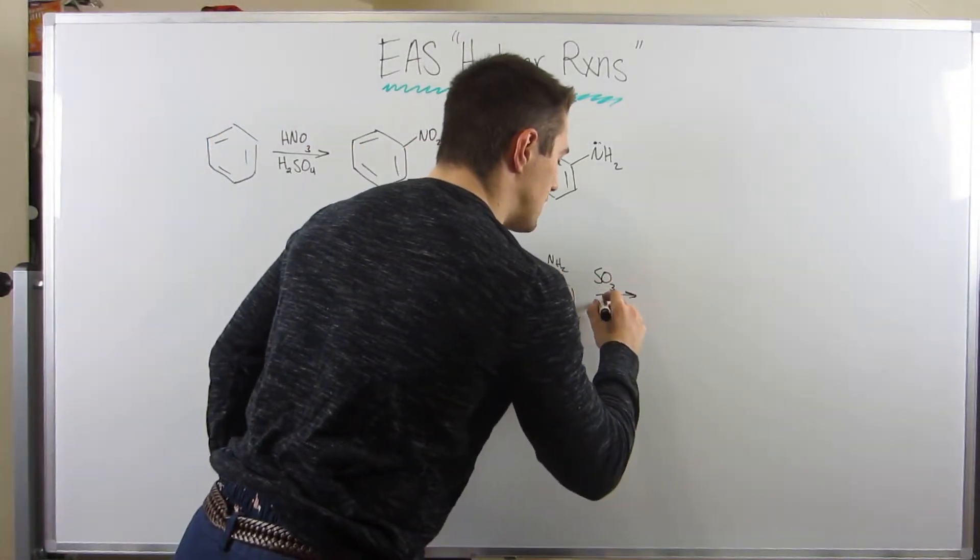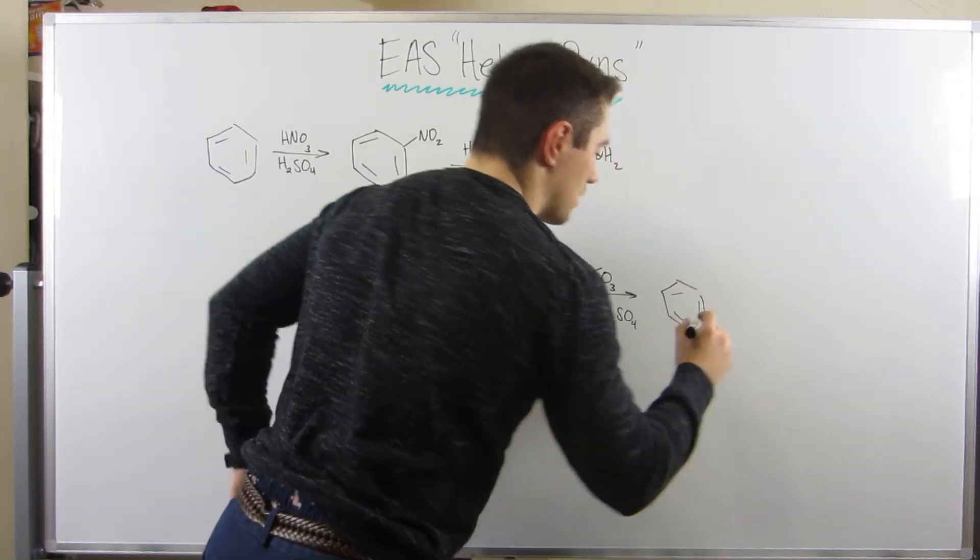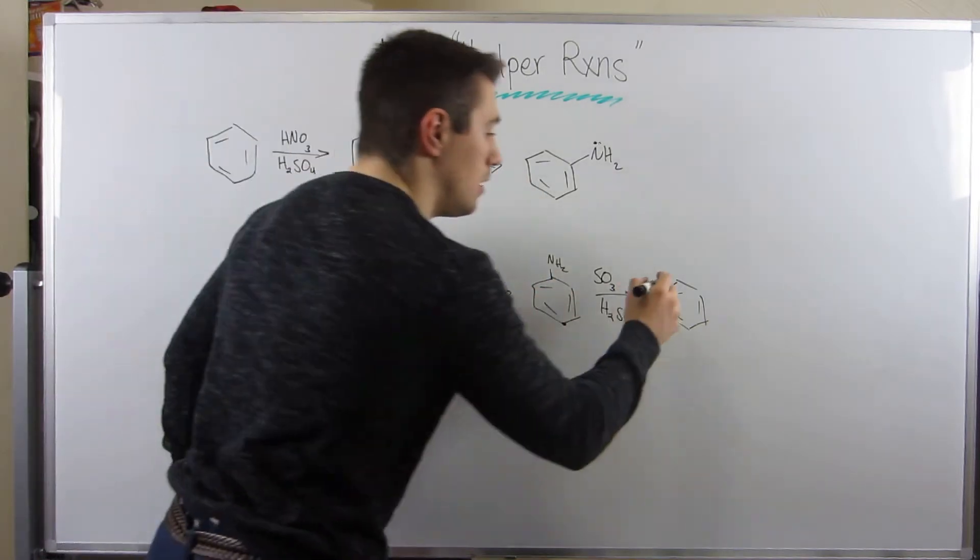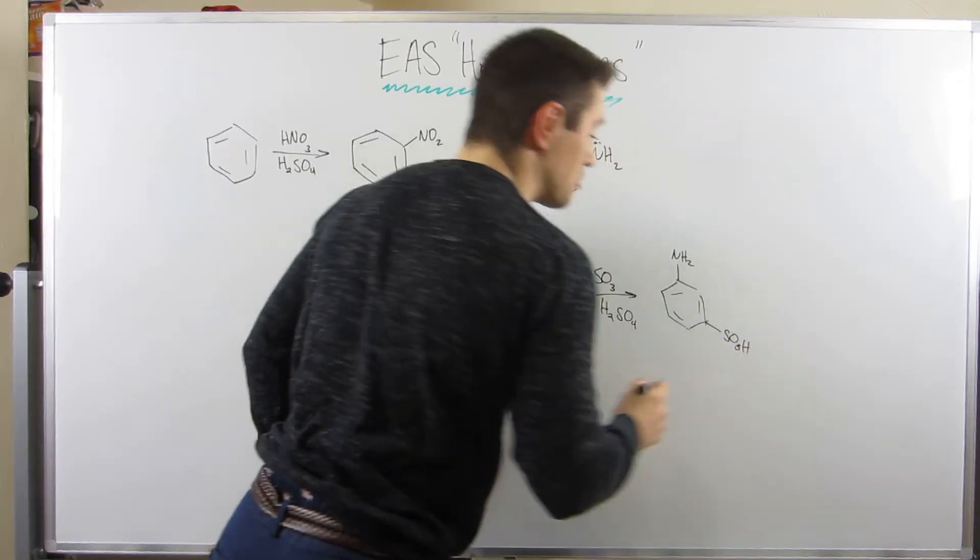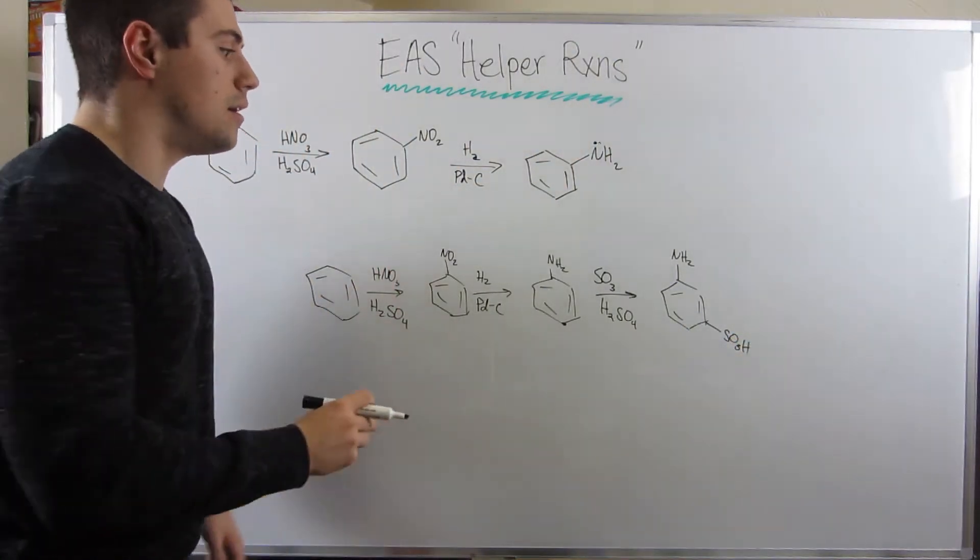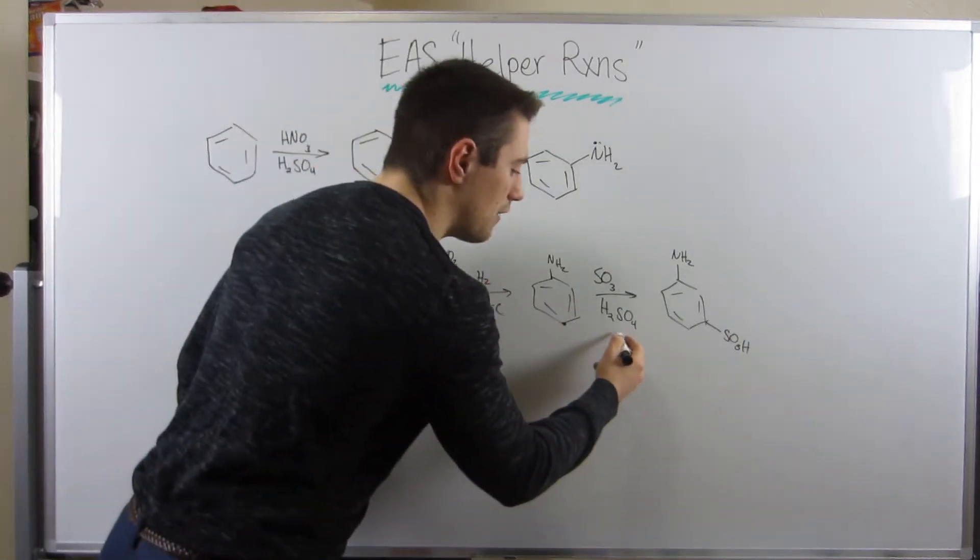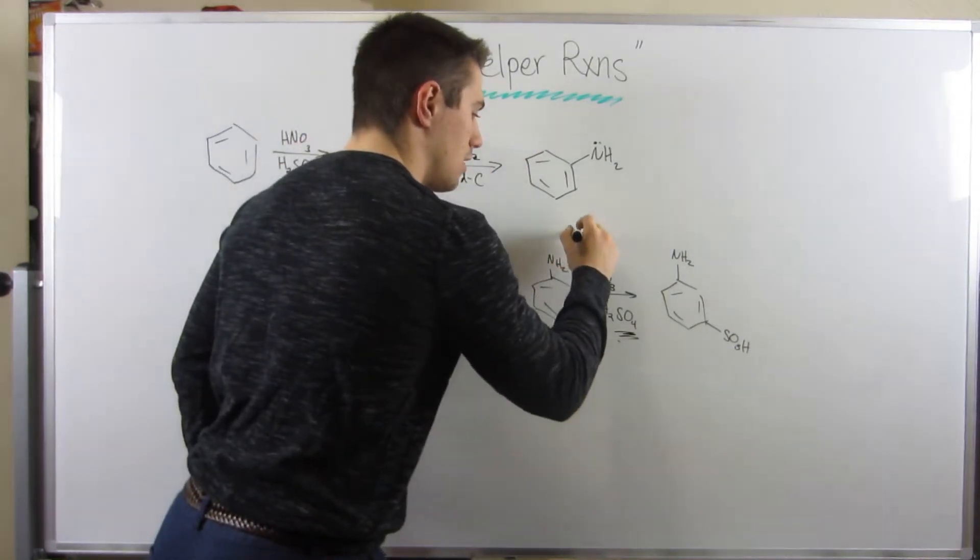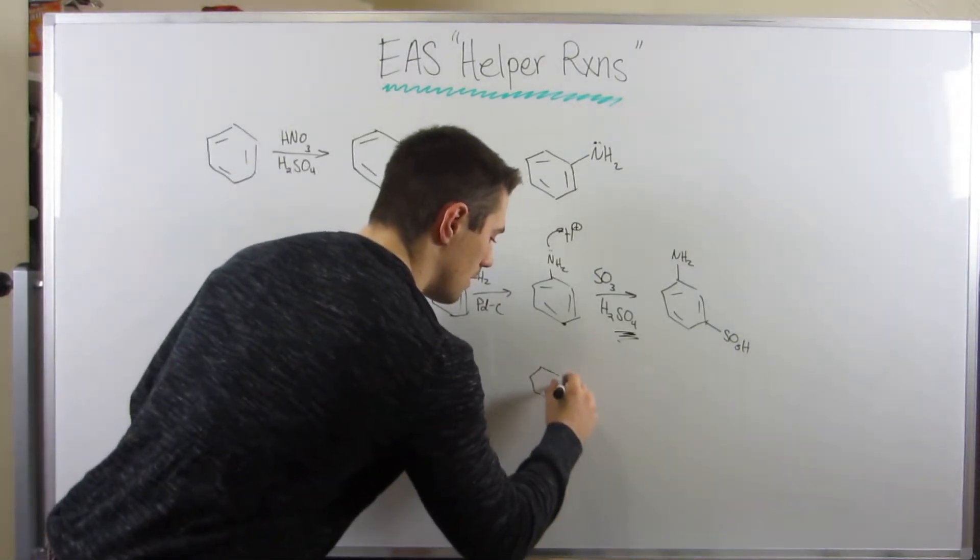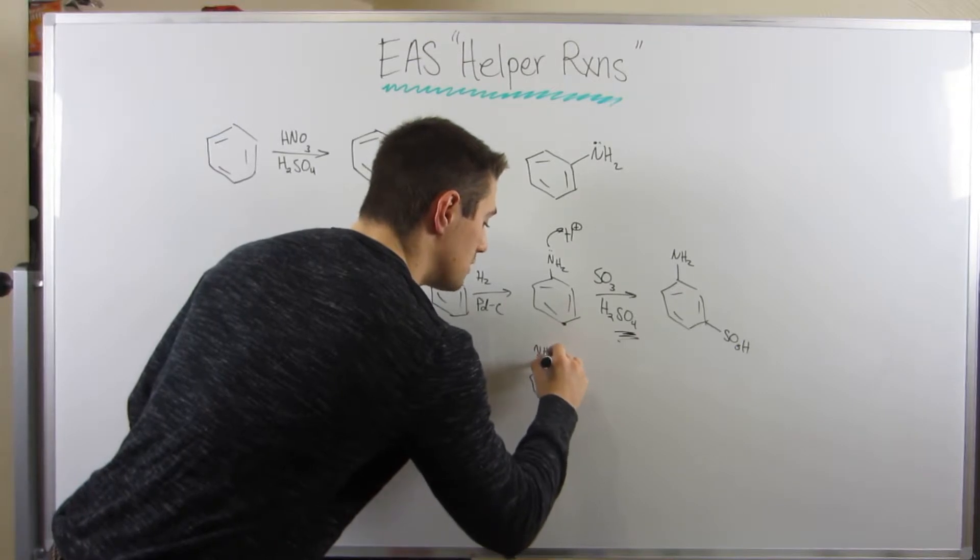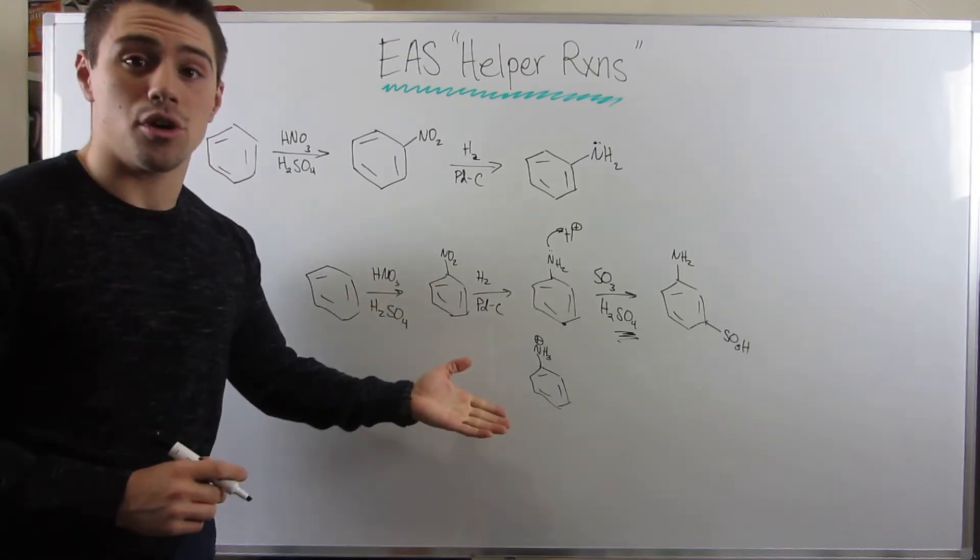Well, if we did that, I'm going to tell you right now, here's what would occur. Here is the regiochemistry that would occur, where things actually end up. We actually would direct meta, and here's why. Because this NH2 is so basic, at some point in the mechanism, because we have all this strong acid around, this NH2 is going to grab H+. That's going to make him NH3+. And look at what kind of director he becomes. He has no more electrons pumped to the ring, and he's positively charged.